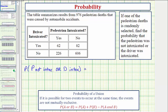Remember, probability compares the favorable number of ways divided by the total number of ways. So we're selecting one pedestrian death and determining the probability the pedestrian was not intoxicated or the driver was intoxicated. But because there are 976 deaths, the total number of ways of selecting one pedestrian death would be 976, which would be the denominator of our probability.